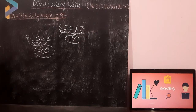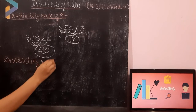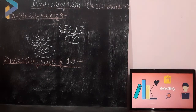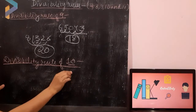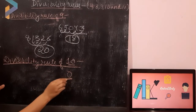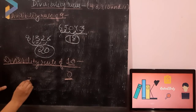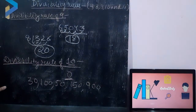Now I am going to explain the divisibility rule of 10. The rule of 10 is very easy, just like the rule of 5. In 5, the rule says if the unit digit is 0 or 5, the number is divisible by 5. Same goes with 10 — if the unit digit is 0, the whole number is divisible by 10. For example: 30, 100, 50, 150, 900 — all of these are divisible by 10.